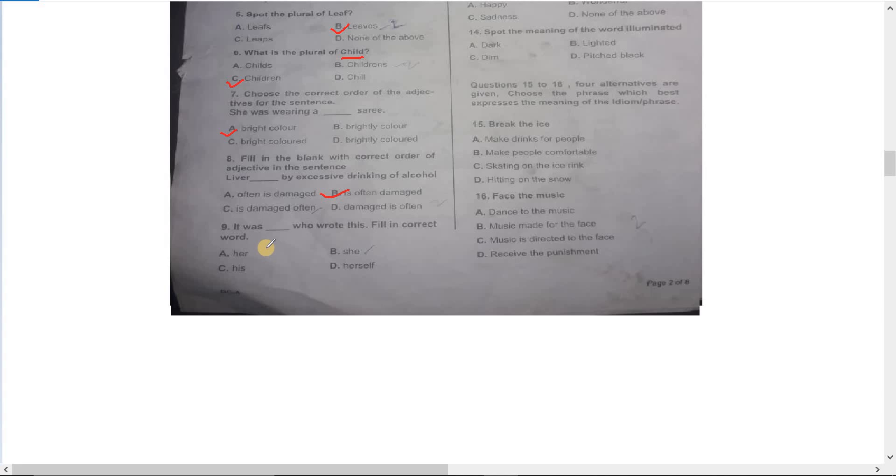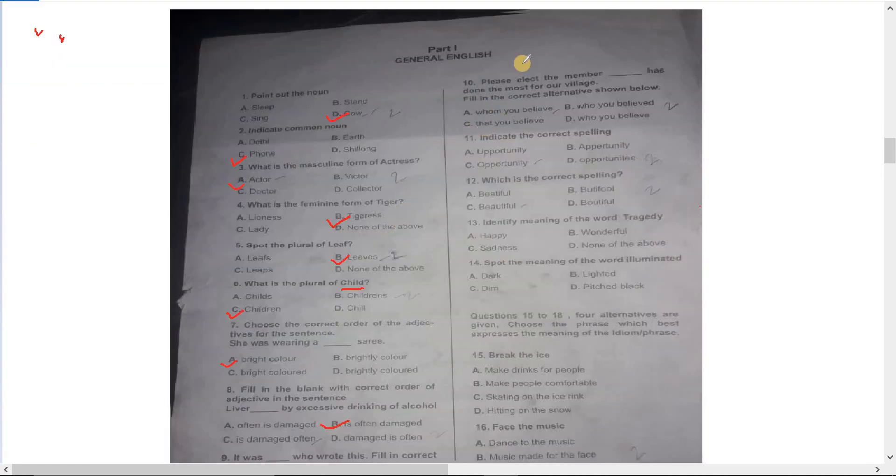Number nine: fill in the correct word. It was she who wrote this, not her. Number B: she. Number ten: please elect the member who you believe has done the most for our village. The correct answer is number D: who you believe.